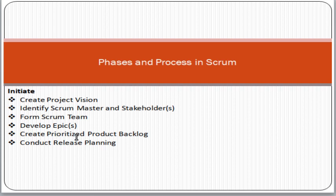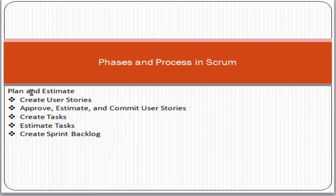Then we create the prioritized Product Backlog. The Product Backlog is the complete list of requirements for the product — think of it like a scope document or Excel sheet where all requirements are listed priority-wise. Priorities are set by the Product Owner. Then we conduct Release Planning — for example, after every four weeks we release deliverables to the customer, planning how many releases will be made within the project timeline.